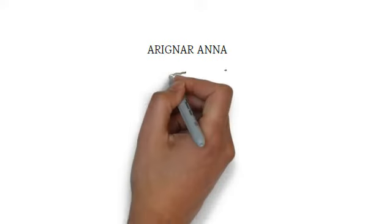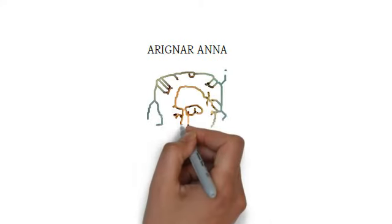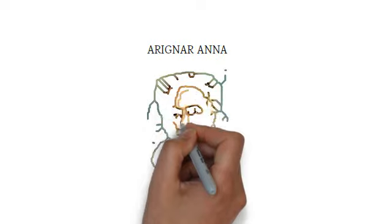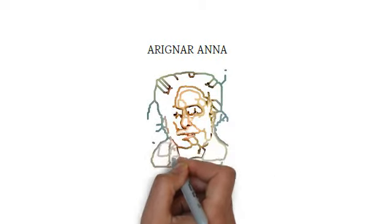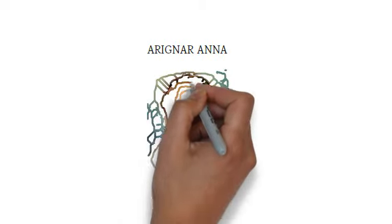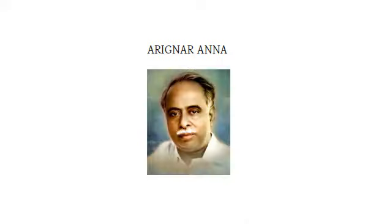C.N. Annadurai was an Indian politician who served as the last chief minister of the Madras Presidency. He was also the first chief minister of Tamil Nadu. He was the first member from the Dravidian parties to use Tamil cinema for political propaganda.